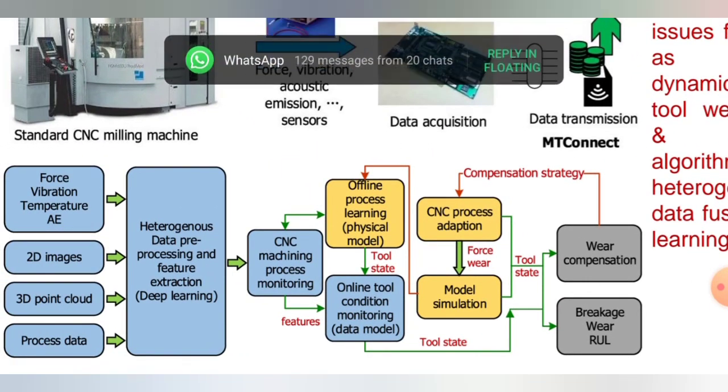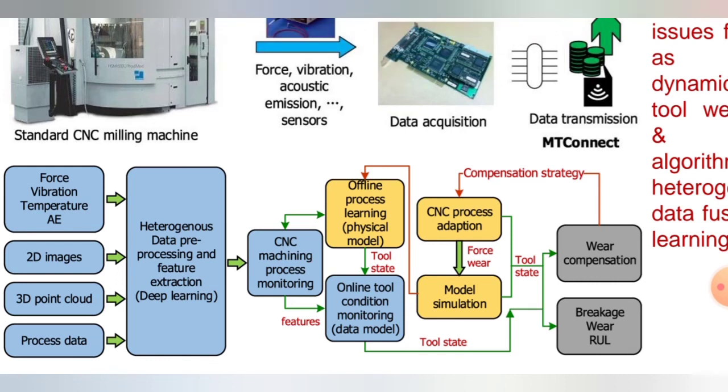With this, we can see force, vibration, temperature, 2D images, 3D point cloud, and processing data go through heterogeneous data preprocessing and feature extraction. This is connected to CNC machining process monitoring, which features online tool condition monitoring and offline processing learning physical model.